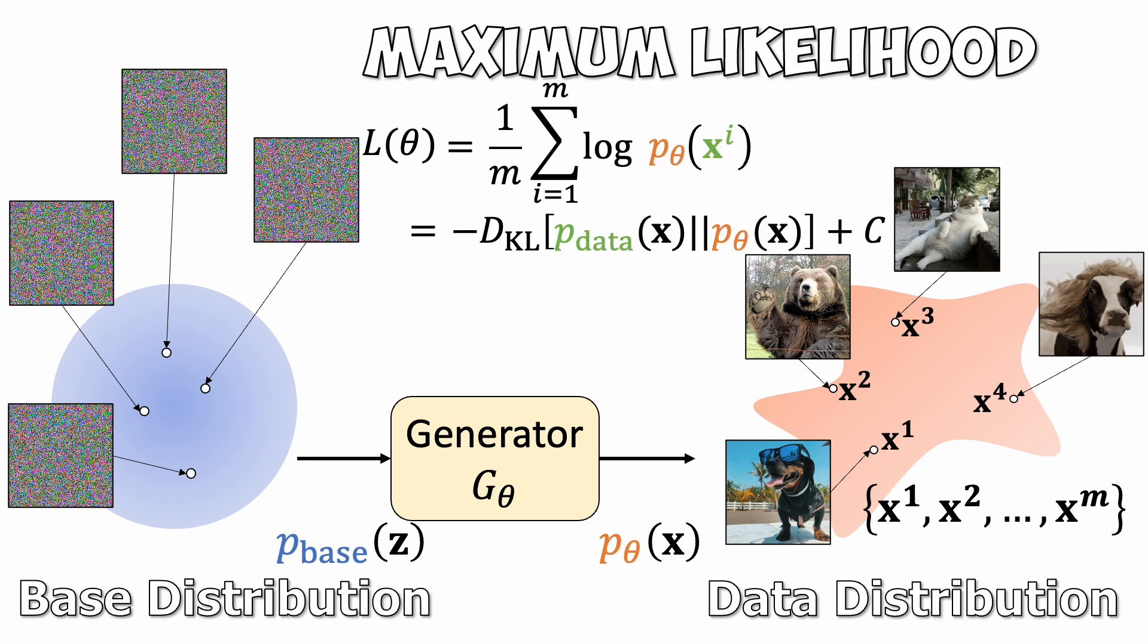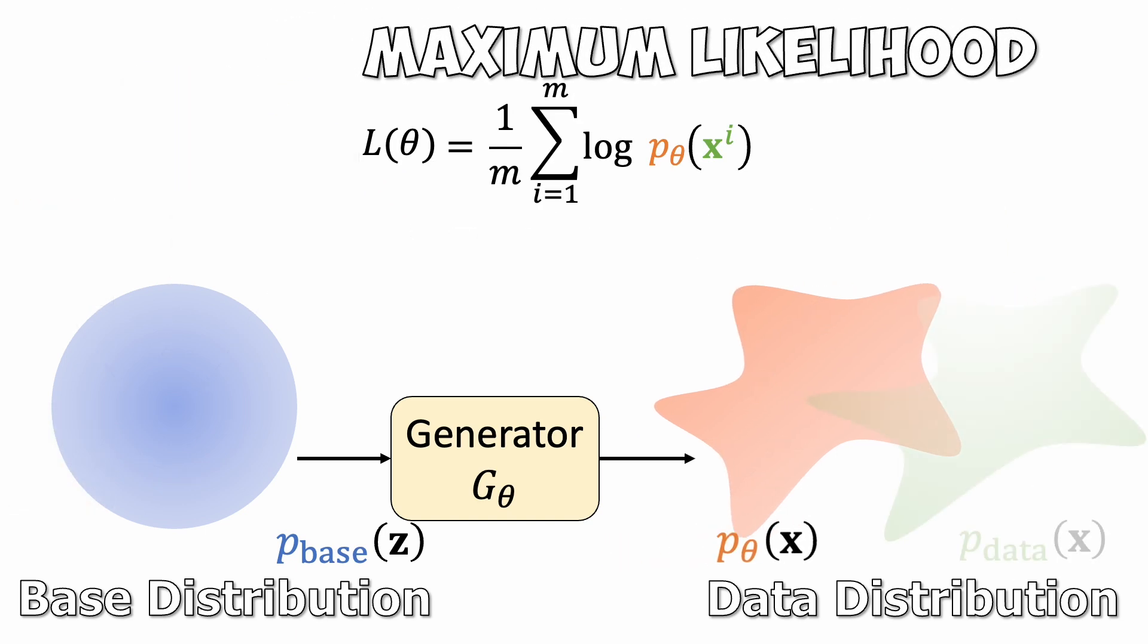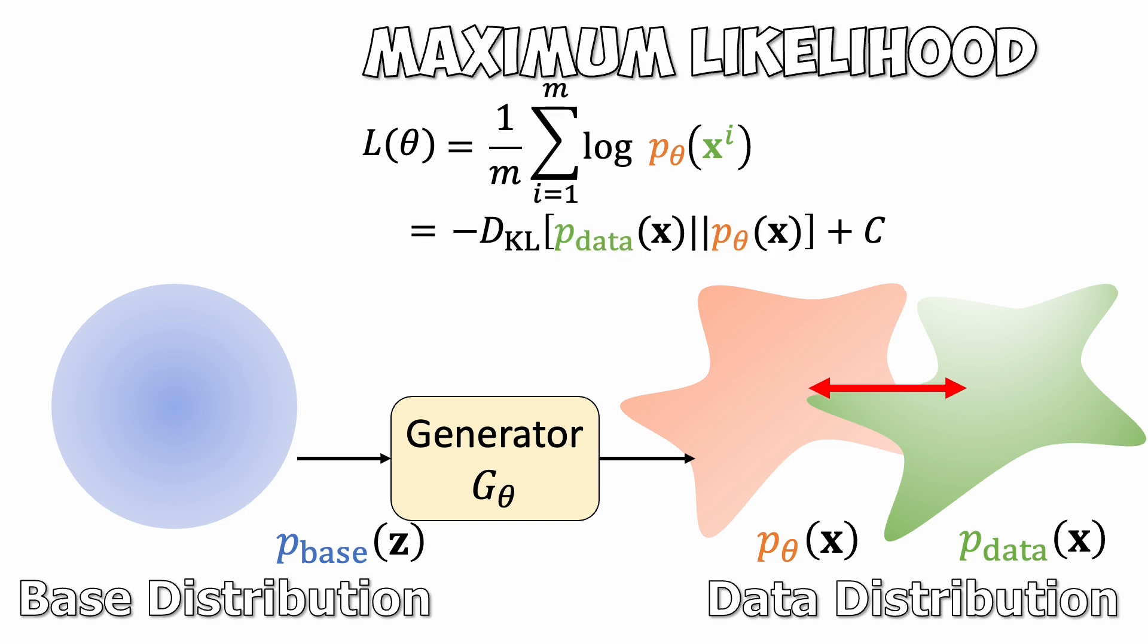We can train this generator by maximum likelihood. This corresponds to minimizing the KL divergence between the two distributions.